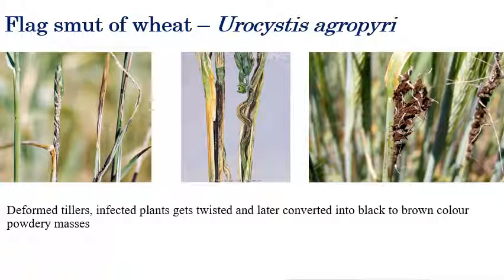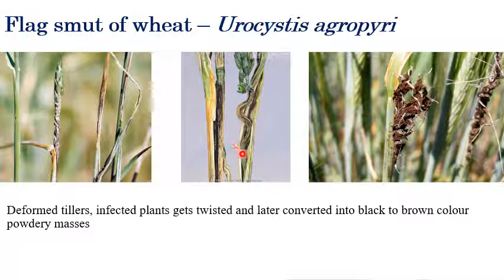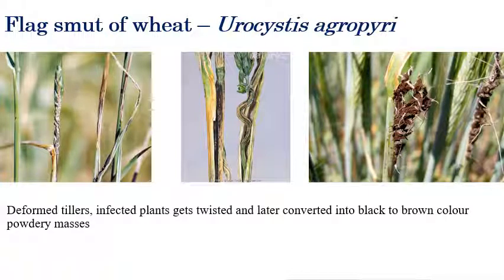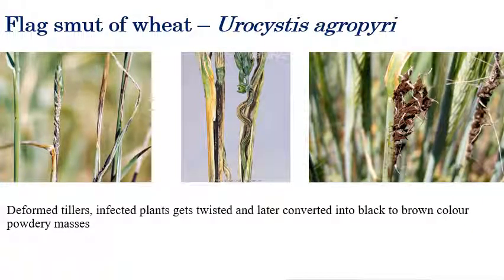The next one is flag smut of wheat, caused by Urocystis agropyri. The symptoms include deformation of tillers — the infected plant gets twisted in a spiral-like manner. In later stages, the tillers are completely converted into brown or black color powdery masses. That is the flag smut of wheat caused by Urocystis agropyri.